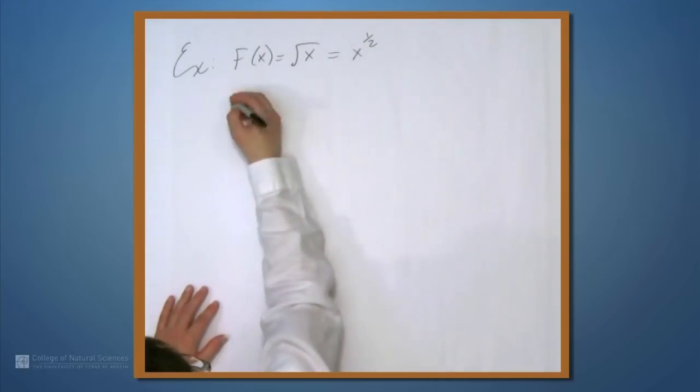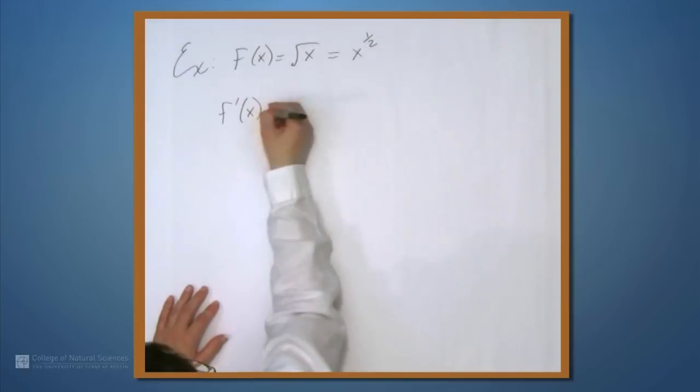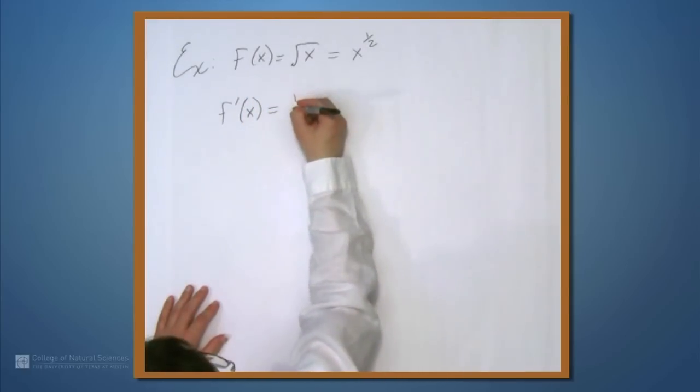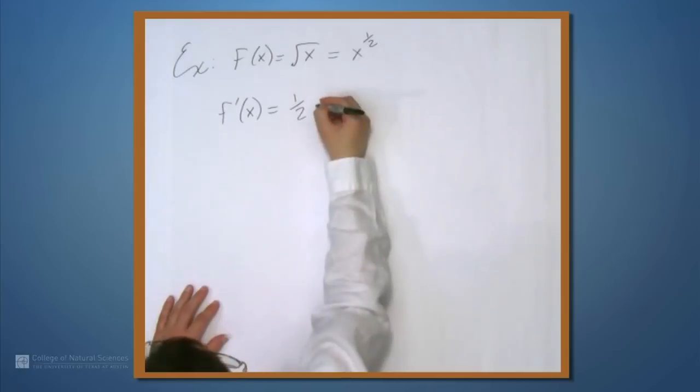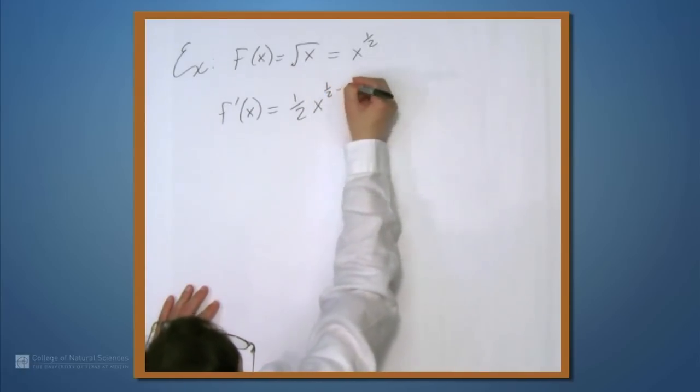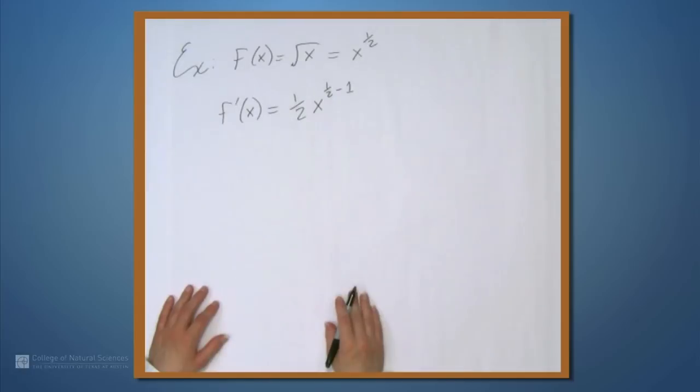Now we can apply the rule to find f'(x). So this is 1 half x to the 1 half minus 1. Now if you're not told to simplify, you can probably leave it like this. But this is common enough that I want to carry this all the way through to its fully simplified form. So the first thing, let's simplify that exponent. We have 1 half x to the negative 1 half.